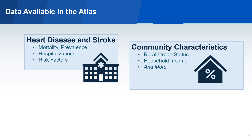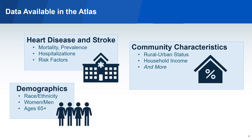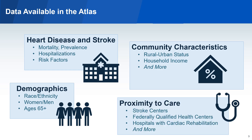Data on community characteristics, such as rural-urban status, household income, and much more. Demographic data, including race and ethnicity, sex, and those aged 65 and older. And proximity to health care, such as stroke centers, federally qualified health centers, hospitals with cardiac rehabilitation services, and more.